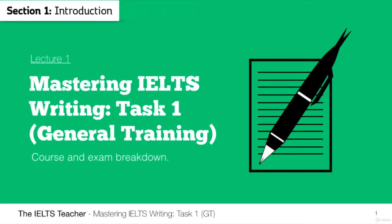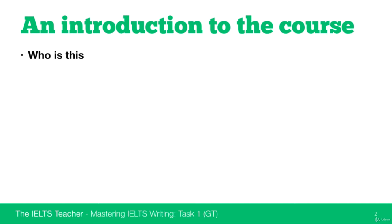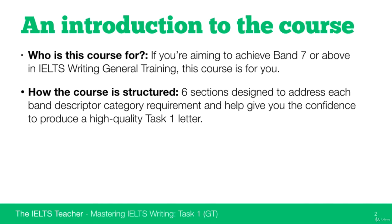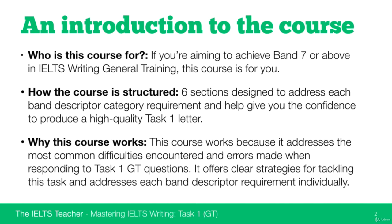In this first lecture we're going to talk about how this course is structured and what you can expect, and we'll also have a quick look at the IELTS exam in general. This course is for anybody aiming to achieve a band 7 or above in IELTS writing, the general training module. It is divided into six sections designed to address each band descriptor category requirement, and to help give you the confidence to produce a high quality task one letter using various strategies, techniques, and vocabulary.